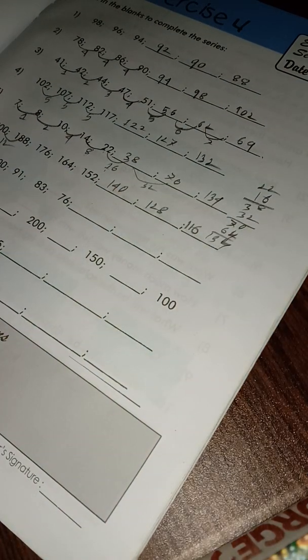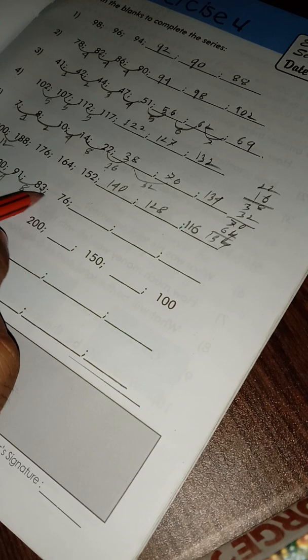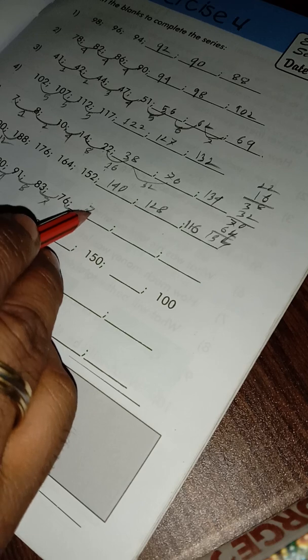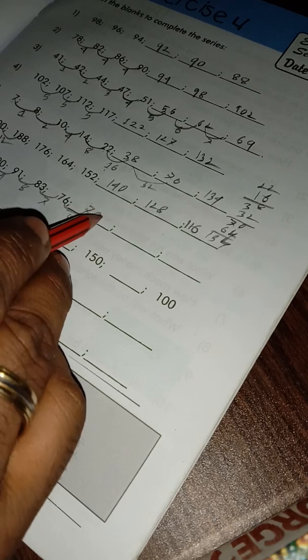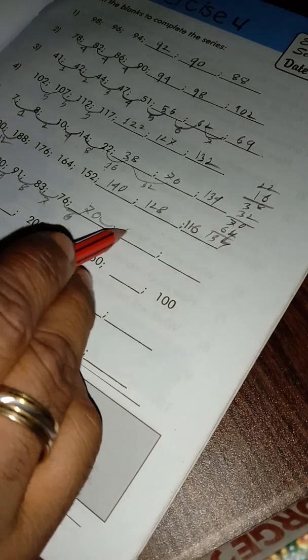Now here decreasing by 10, decreasing by 9, decreasing by 8, decreasing by 7. Now decreasing by 6 equals 66, now decreasing by 5 equals 61.